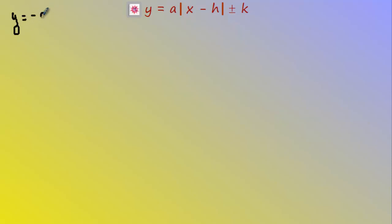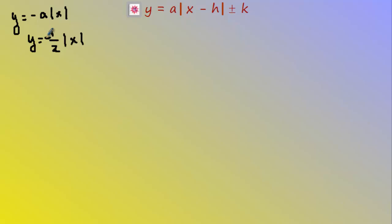One very important distinction: when you have a negative sign in front of 'a', the negative sign and the 'a' are two different things. The negative sign is a reflection; the 'a' is a stretch or shrink — they do not go together. For example, negative one-half absolute value of x has two separate transformations: a reflection over the x-axis, and a vertical shrink by a factor of one-half. Do not combine those into one transformation.